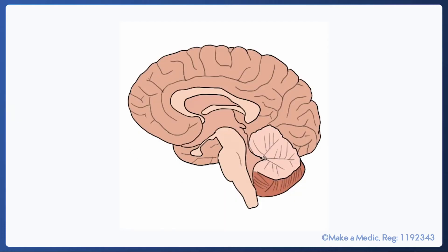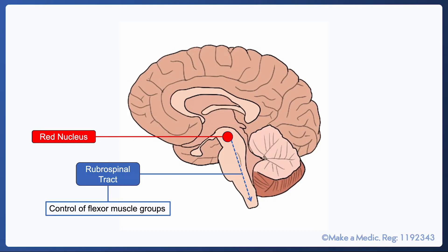The reason these forms of posturing are different is thought to be related to a key structure within the midbrain called the red nucleus. It's the origin of the rubrospinal tract, which is responsible for control of muscle tone in flexor muscle groups.